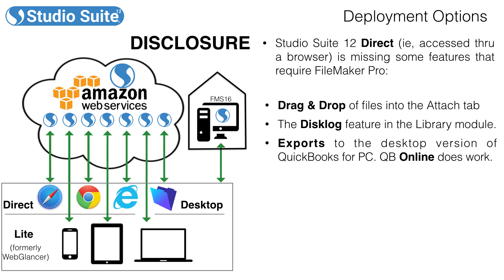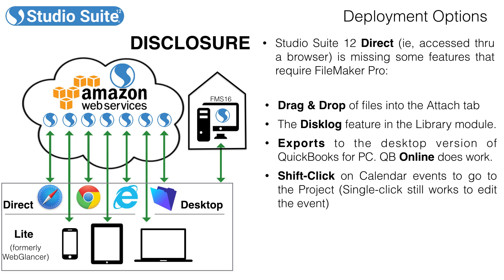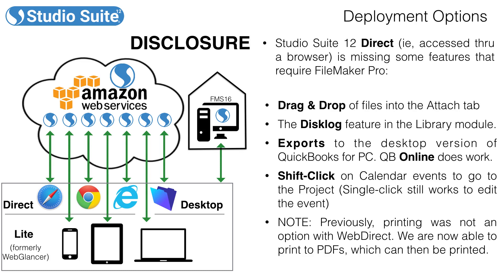In the calendar, shift-clicking on an event to view its project is not available. However, single-clicking to view an event is still available. On another note, previously printing was not an option with FileMaker's WebDirect technology. Now we are able to print to PDF from the browser, and of course you can print those PDFs as needed.